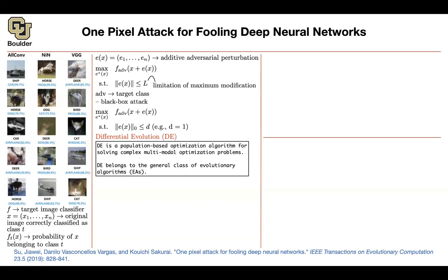Differential evolution belongs to the class of evolutionary algorithms. We saw an example of an evolutionary algorithm in AutoML — that was an aging evolutionary algorithm. Now we have differential evolution. The search space consists of candidate solutions: x1 and y1 give the location of a pixel, for instance the 10th location in the x direction and the 20th in the y direction gives you a specific pixel.